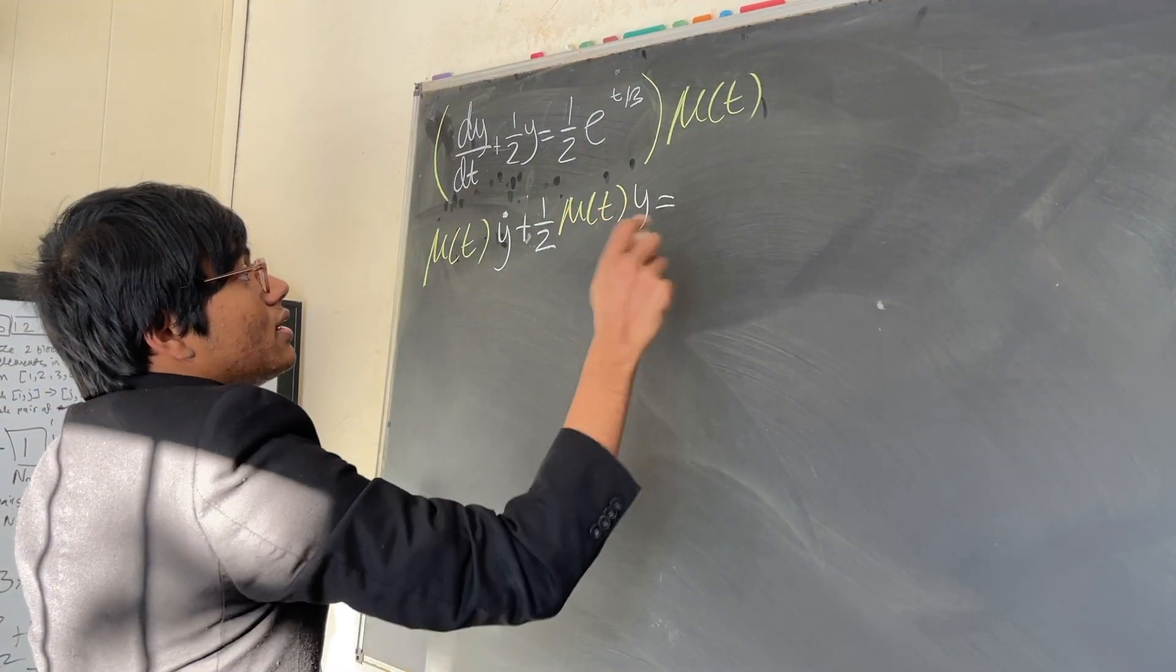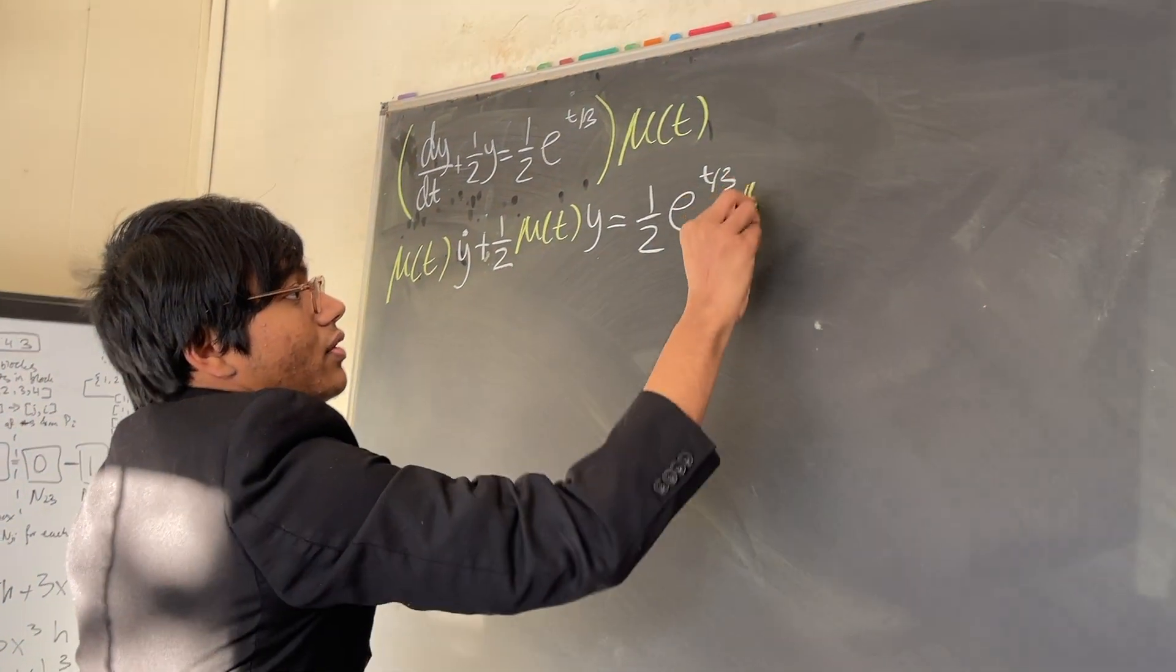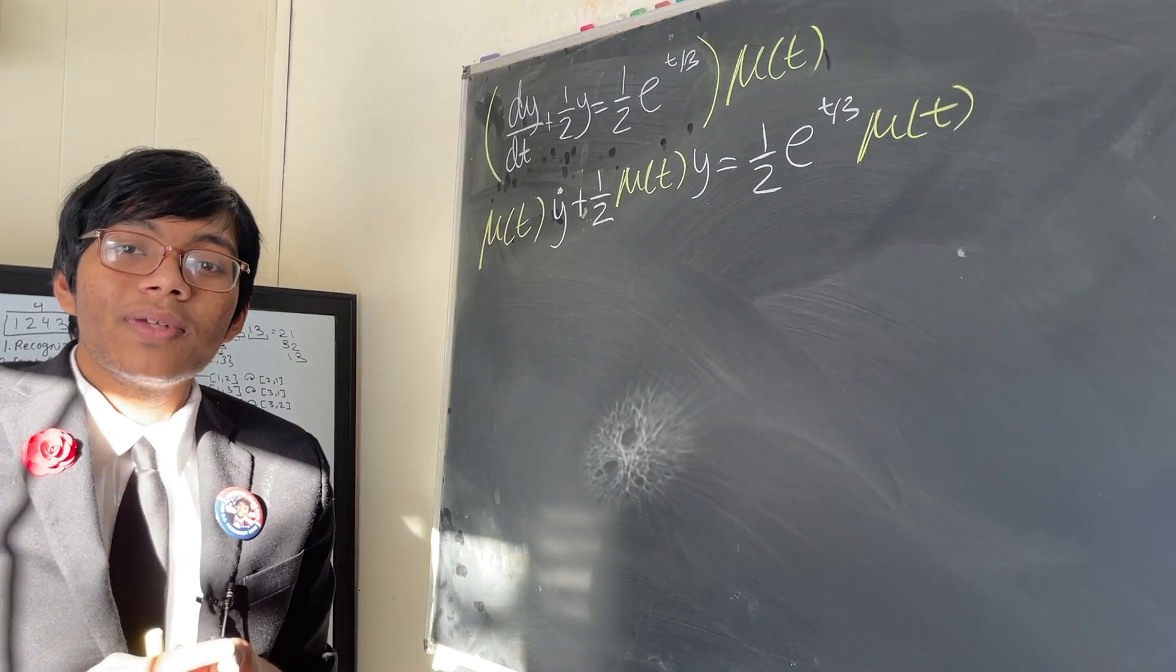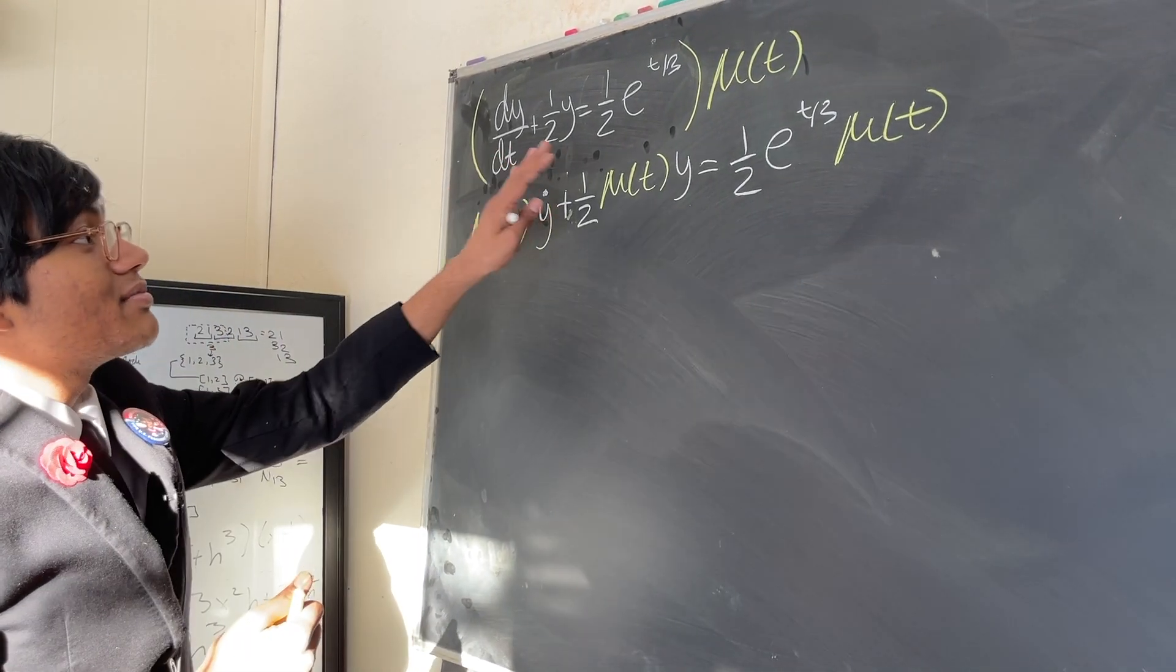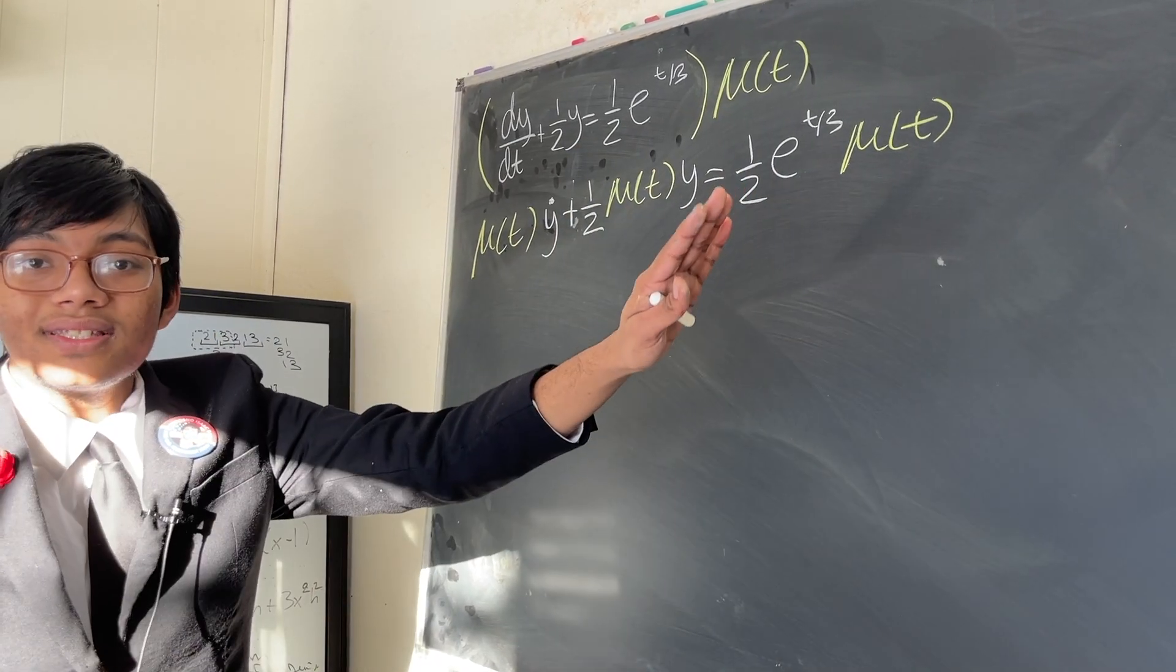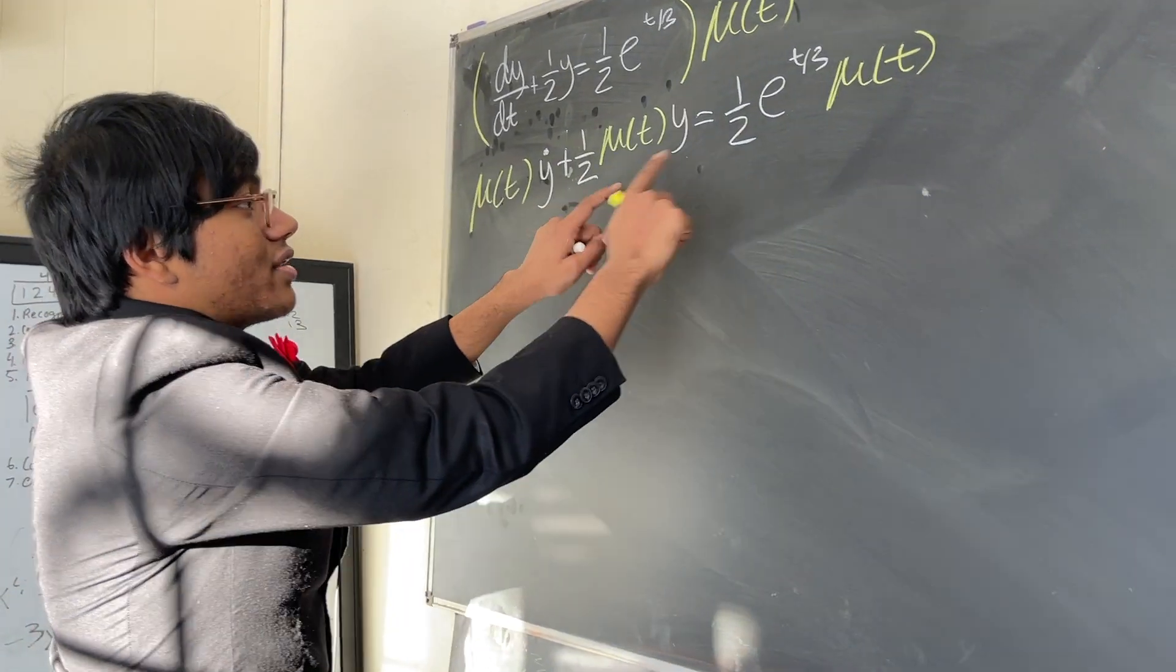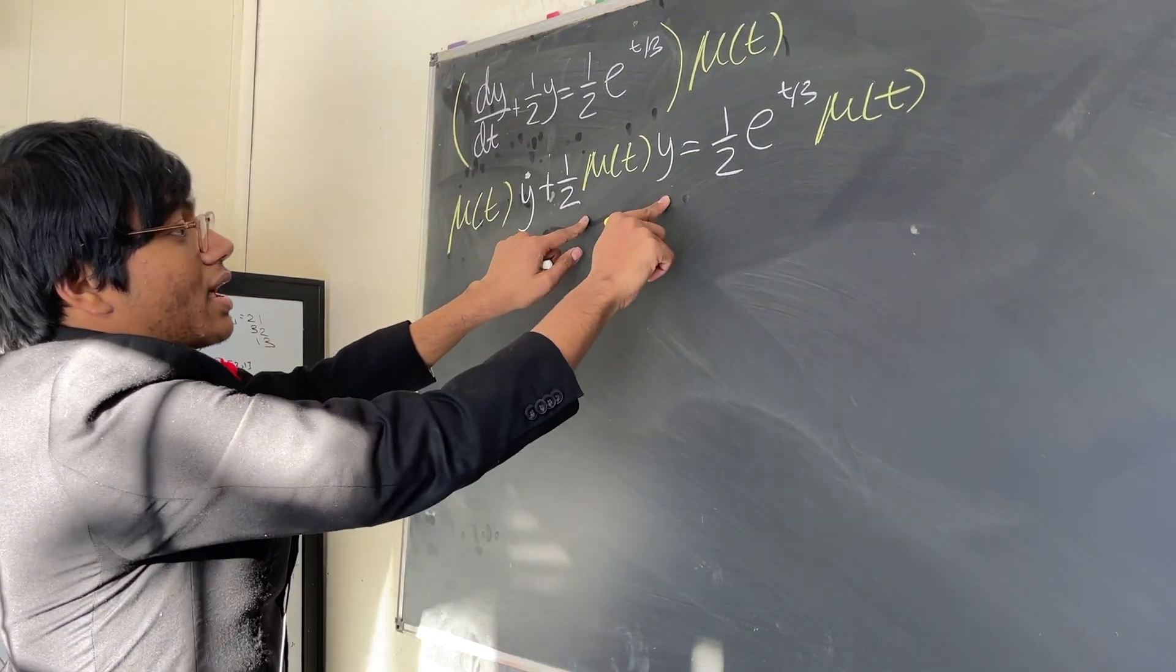Is equal to half e to the t over 3 times mu of t. Now you're wondering, why did I do that? Why is that useful? Well, it's almost like you multiply a fraction by 3 over 3, which is another way to write 1. All I did here is multiplied by a little function that keeps the equation the same, but it's going to help me in a very subtle way. What is that way? Look at the structure of this equation here. What does it look like? It looks like we have a product plus a product equals something. That should remind you of the product rule, right?